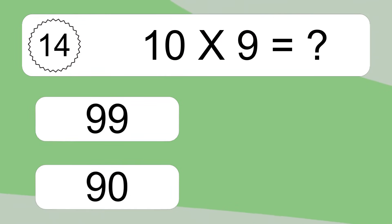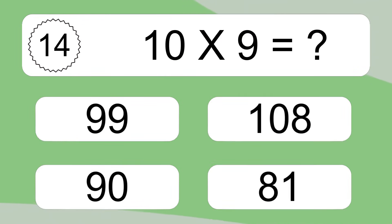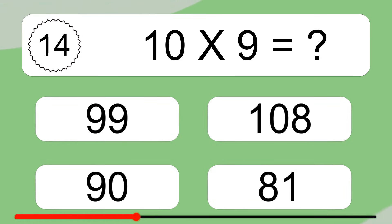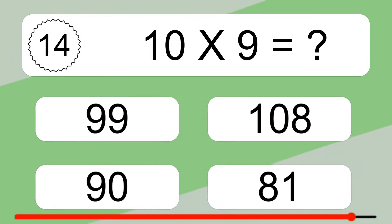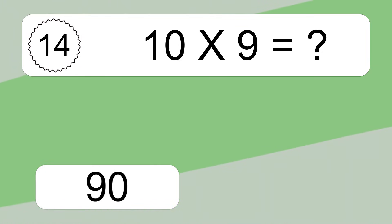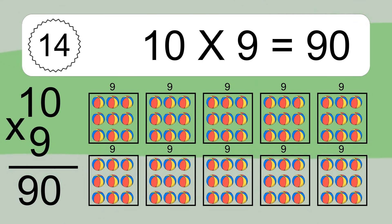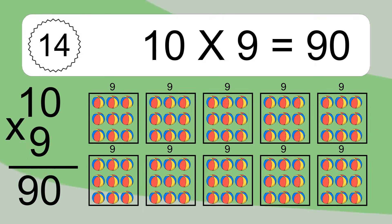10 times 9 equals what? 10 times 9 equals 90. We have 10 boxes and each box has 9 colorful balls inside. If you count all the balls in all the boxes together, you will have 10 times 9 balls. This equals 90 balls.